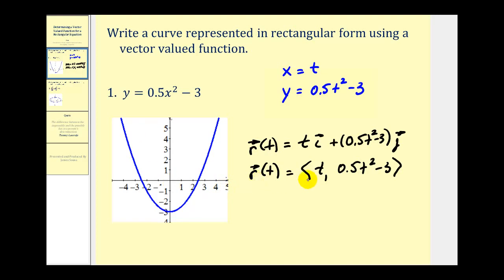Remember, when we express a curve as a vector-valued function, it gives the curve orientation, meaning as t increases, this curve is sketched in a specific direction. Notice that as t increases, x also increases, which means that this curve would be sketched moving from left to right. As t increases, the curve is moving toward the right.